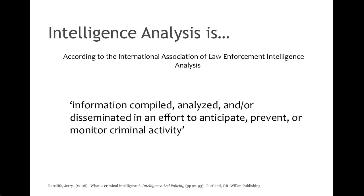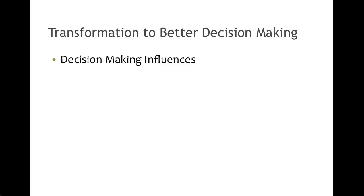Many of the common policing strategies used in law enforcement today use crime and intelligence analysis as their main foundation — strategies such as Comstat, problem-oriented policing, intelligence-led policing, and even the newest version of predictive analytics and predictive policing. Crime and intelligence analysis is instrumental in many of these different strategies. In each of these strategies, crime and intelligence analysis is the use of data and analysis as a catalyst and transformative process in better decision making.